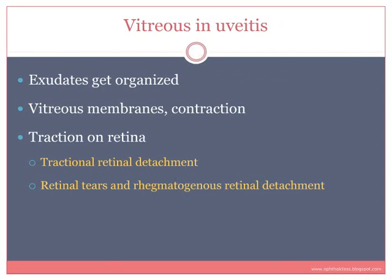Changes in the vitreous: the vitreous has exudates, which get organized and form vitreous membranes. These membranes can contract, causing traction on the retina. The retina is pulled forward, resulting in tractional retinal detachment. When there is more traction it can cause retinal tears, and the resultant detachment is called rhegmatogenous retinal detachment.